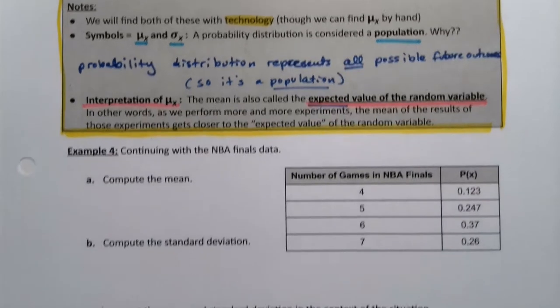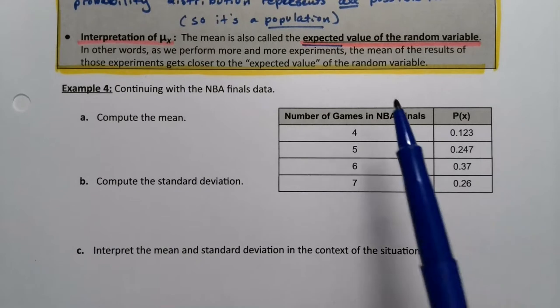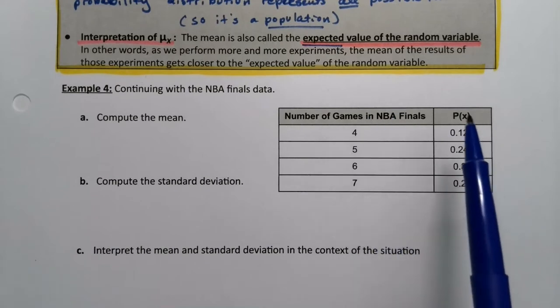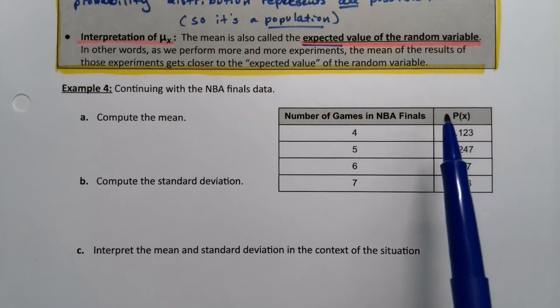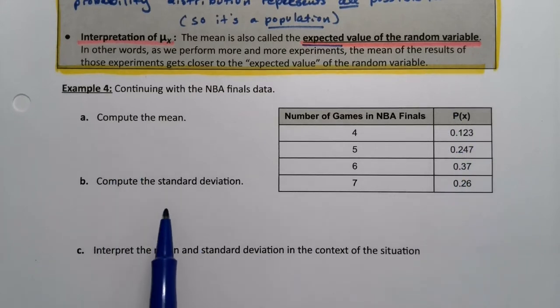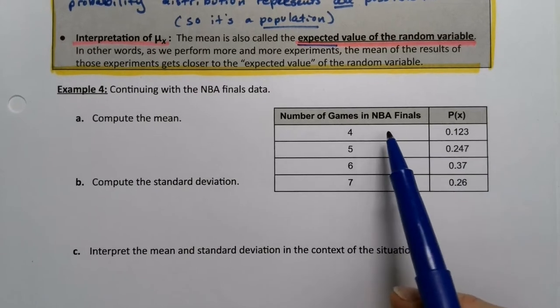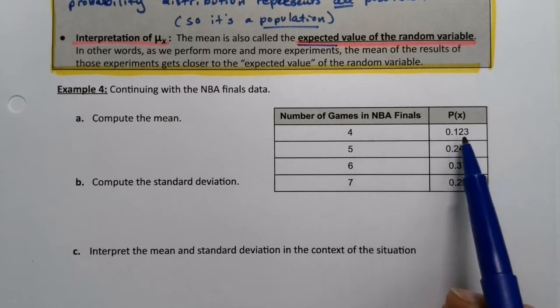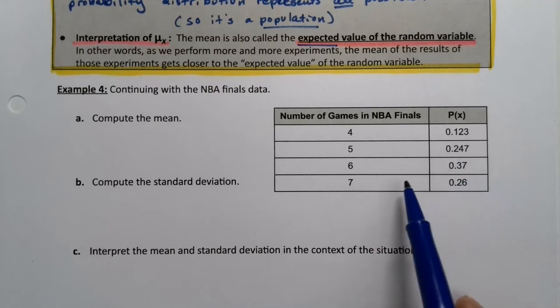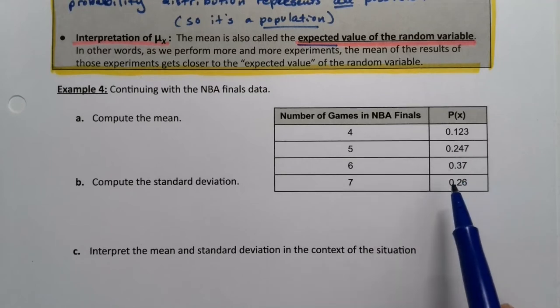Now let's do this in practice. Let's look at our NBA Finals data again with these values for the probabilities that we found earlier. We want to compute the mean and the standard deviation. If you want to find this by hand, you just multiply 4 times 0.123, 5 times 0.247, 6 times 0.37, and 7 times 0.26, and add them up. Matter of fact, I could do that right now with a calculator.